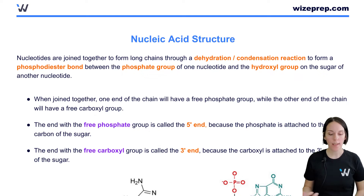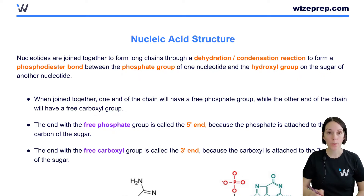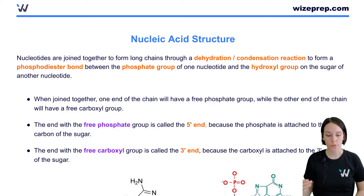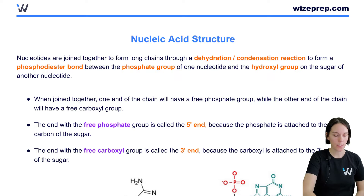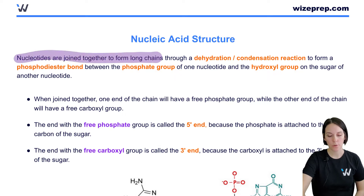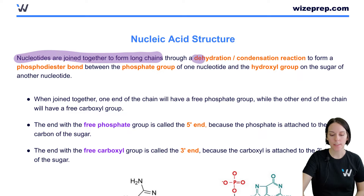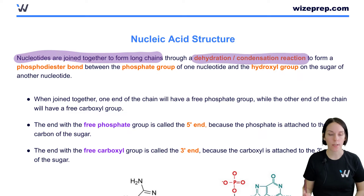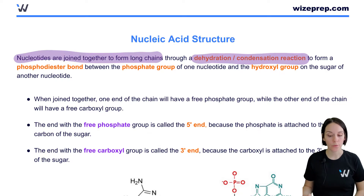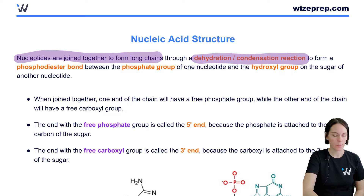In order to form a nucleic acid, these building blocks or monomers are going to be joined together into long chains. The nucleotides are joined together to form long chains, and the reaction that joins them together is going to be a dehydration or condensation reaction — that is the removal of a water molecule to form a bond.